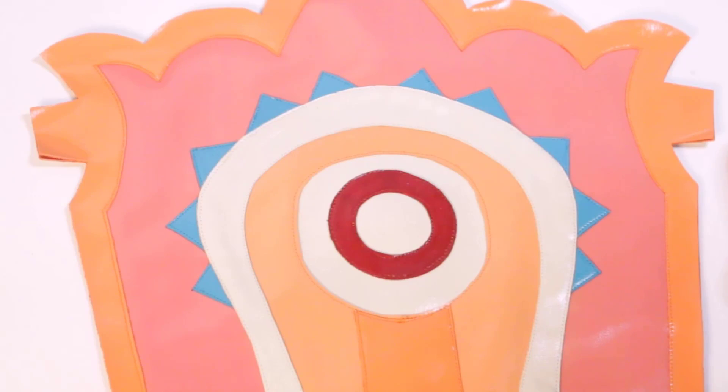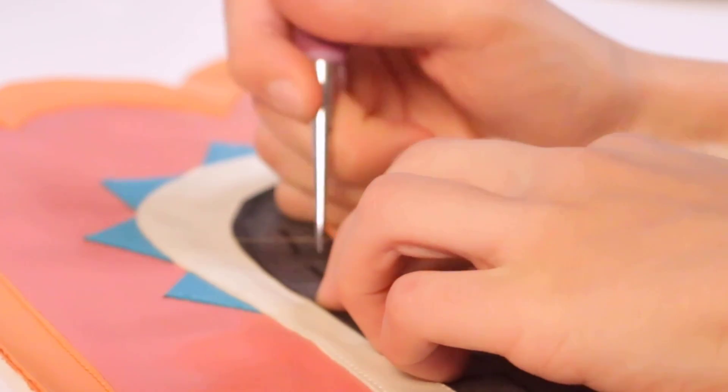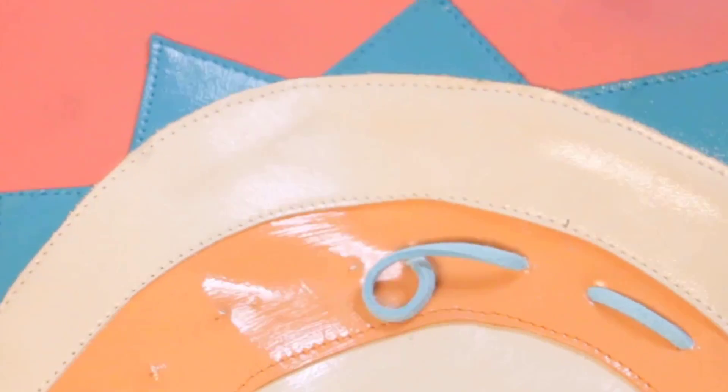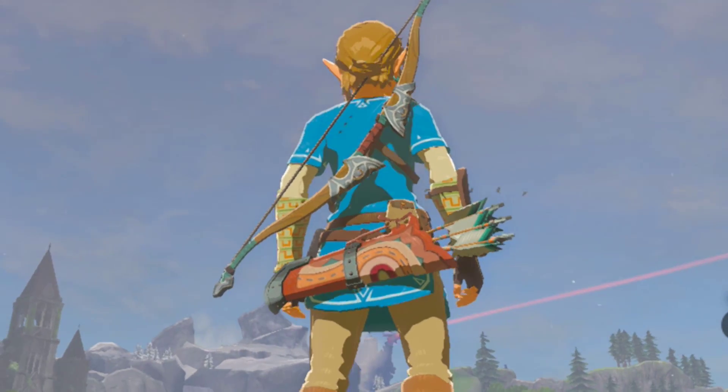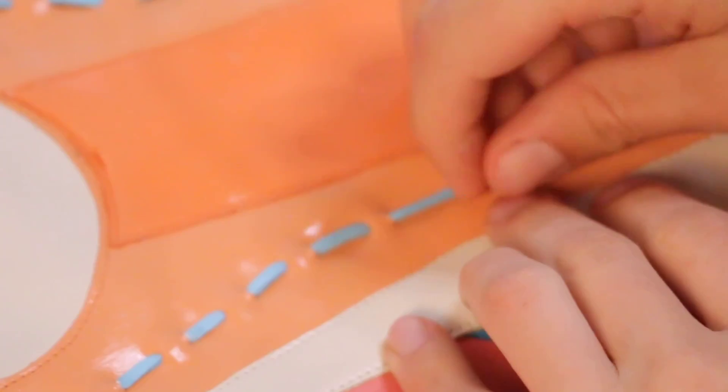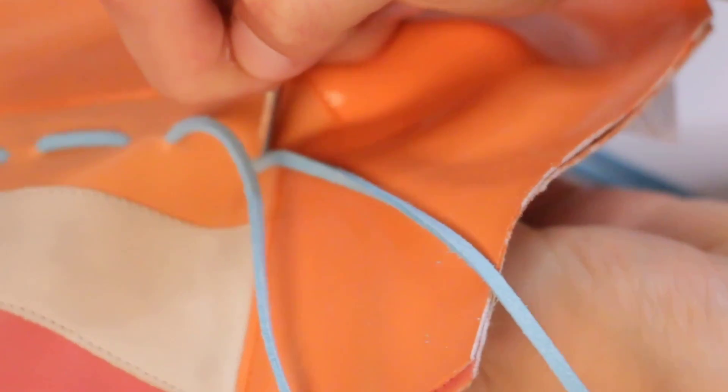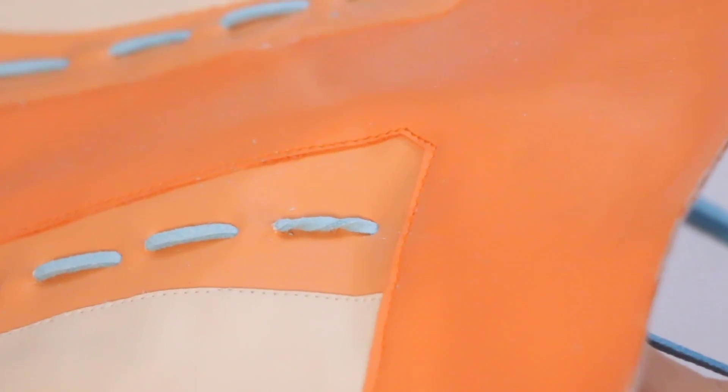After everything was sewn on, I added some blue suede lace around the center. I wasn't quite sure what color I wanted to use at first, because most of the promotional images showed these details as red, but in the final game, the color was actually changed to blue. So in the end, I just decided to go with the blue because I thought it would tie in better with the other colors, and I think I made the right decision.